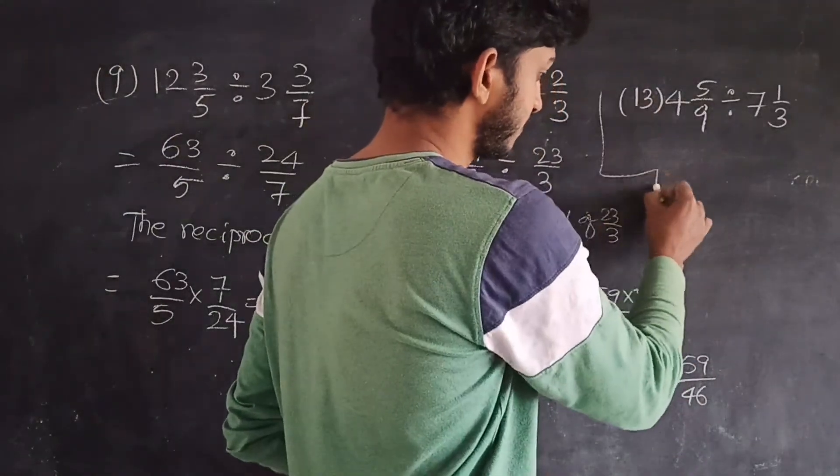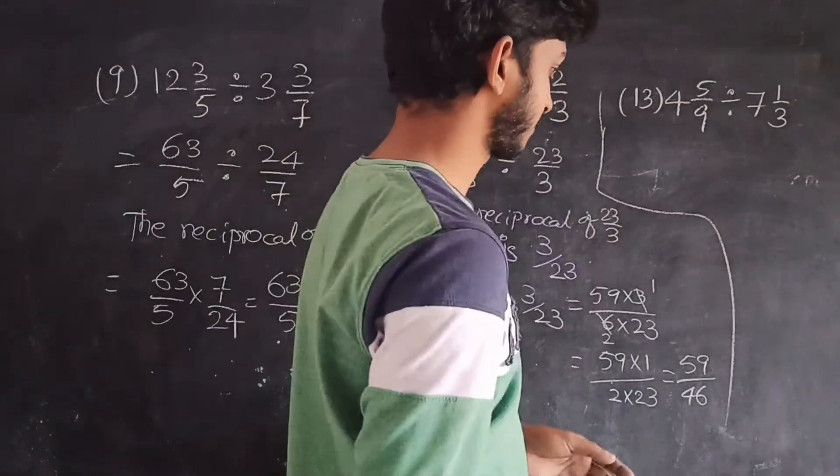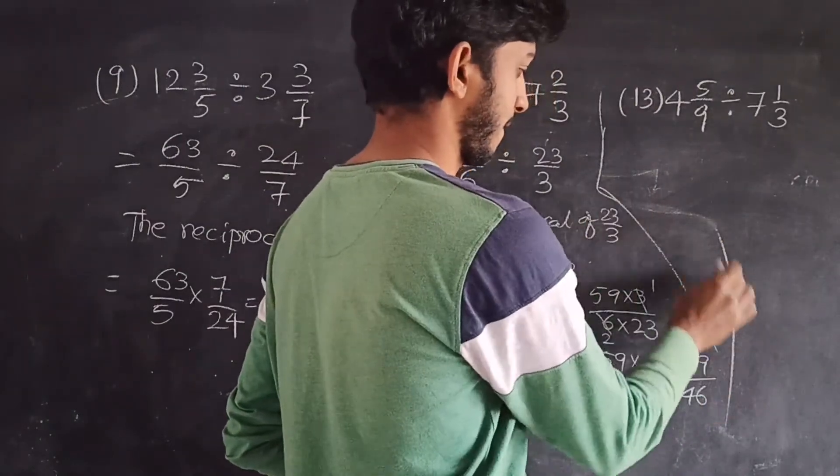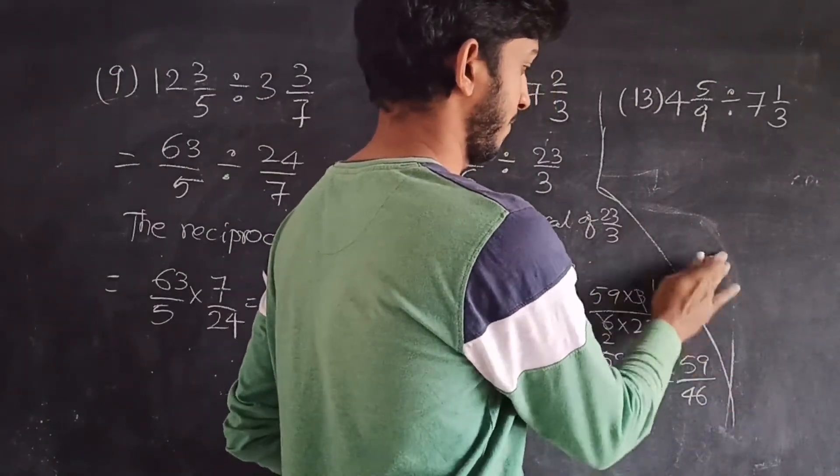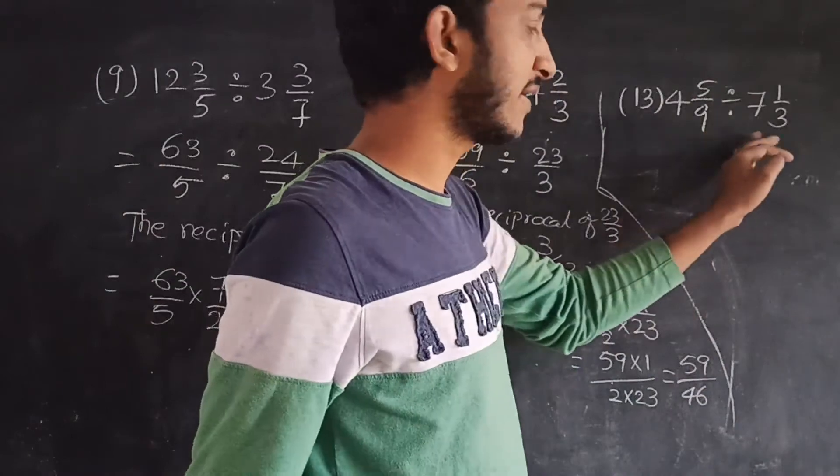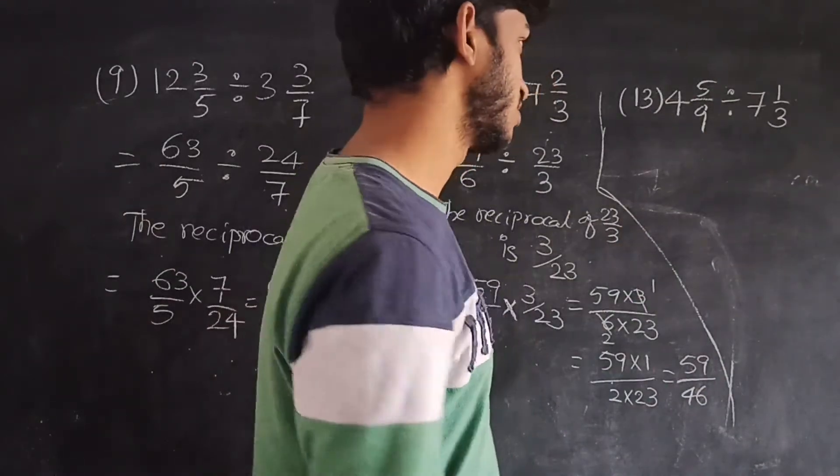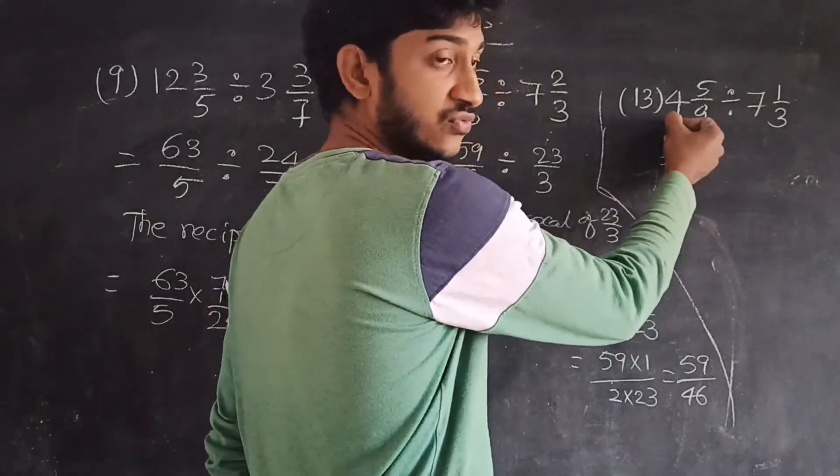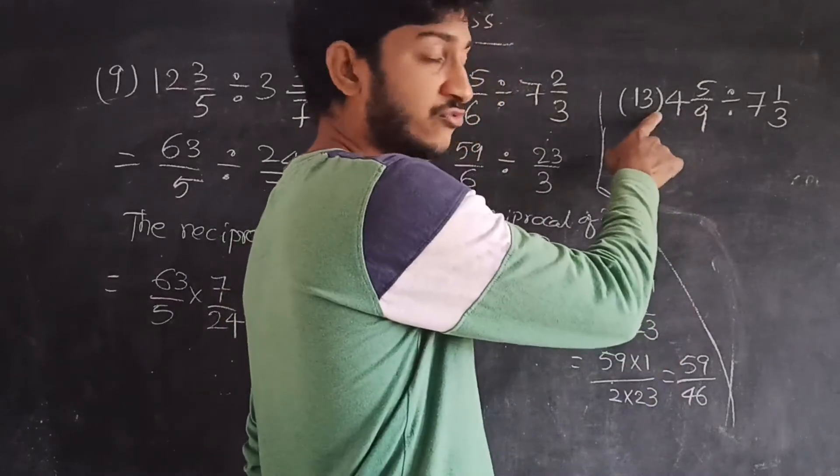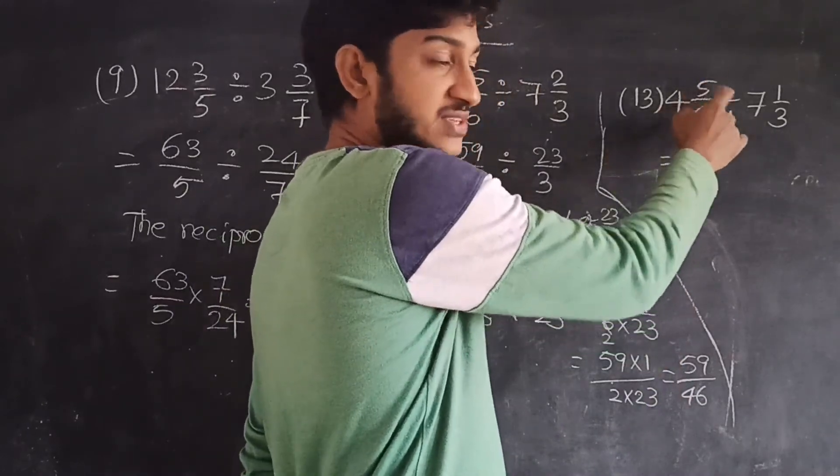Okay, now suddenly, 13th problem: 4 5/9 divided by 7 1/3. So we need to convert 4 5/9. 9 times 4 is 36, 36 plus 5 is 41. 41 by 9.